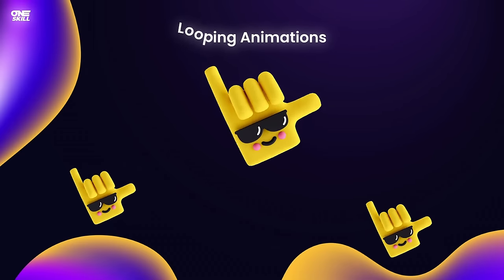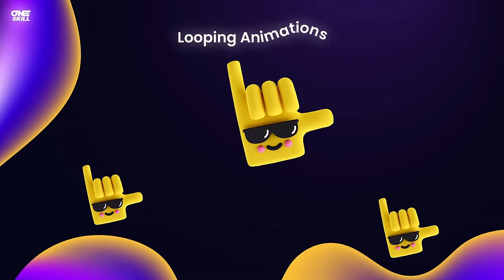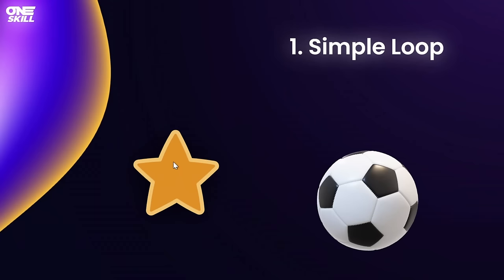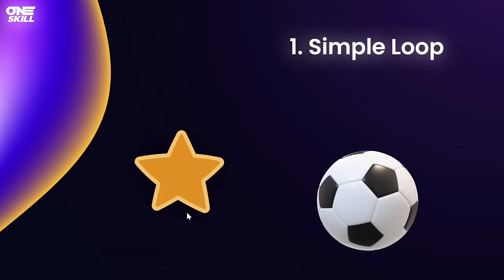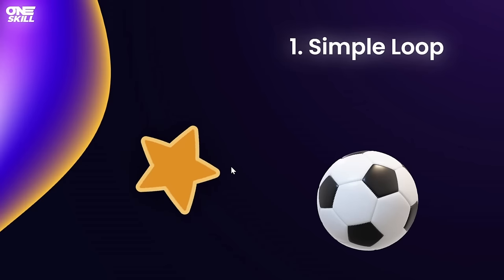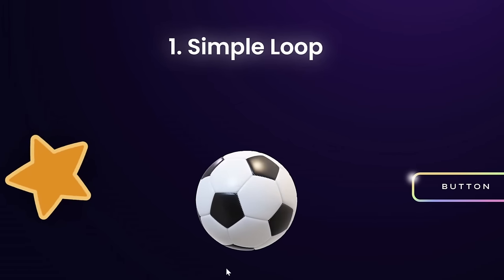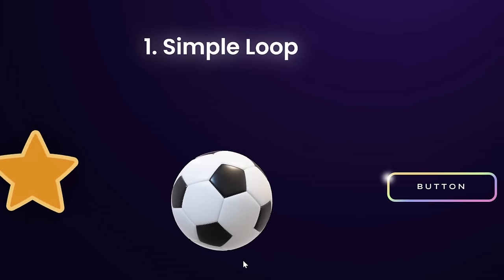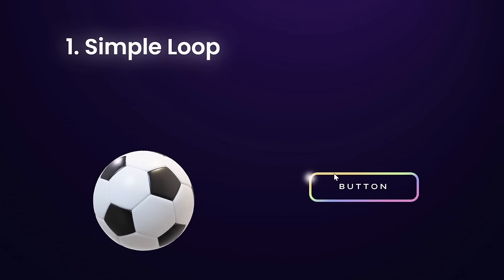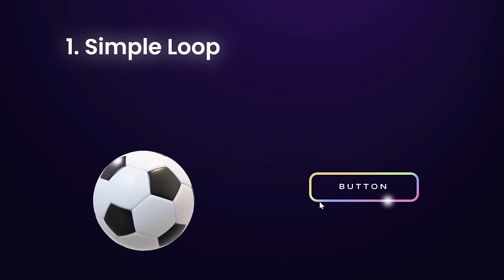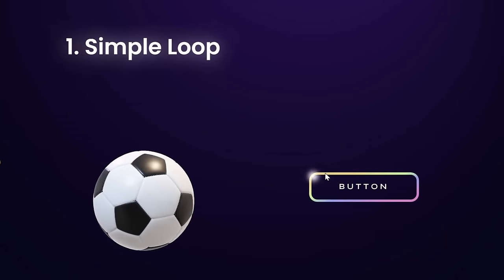Let me show you the five best ways to loop or repeat animations in PowerPoint. First, let's start with something I call a simple loop or simple repeat animation. Here are a few examples: this little star is spinning around and the spin animation just keeps on going, and the same with this 3D soccer ball — it keeps turning and the animation just keeps on going.